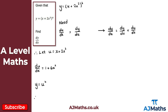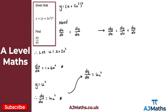From y equals u⁴ we can find dy/du: differentiating y with respect to u gives 4u³. So now we have everything we need. dy/dx equals dy/du times du/dx, which is 4u³ times (1 + 6x²). Be careful — this isn't the final solution because u equals x + 2x³, so we need to substitute u back in.